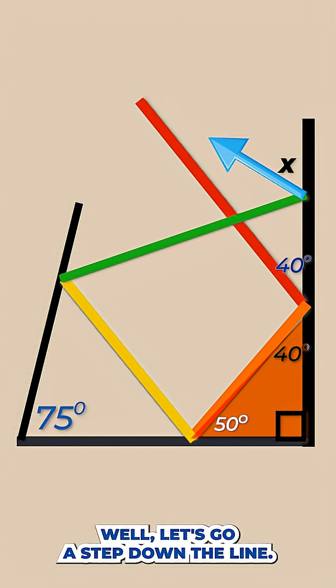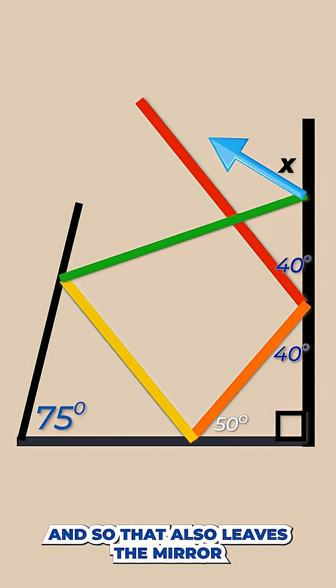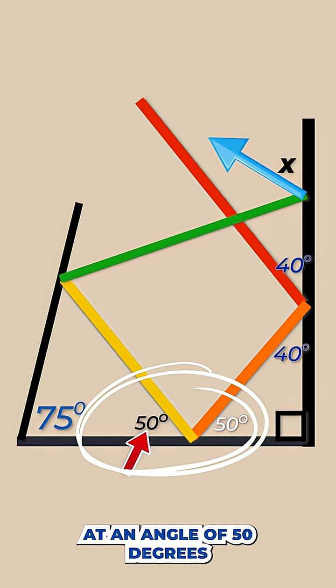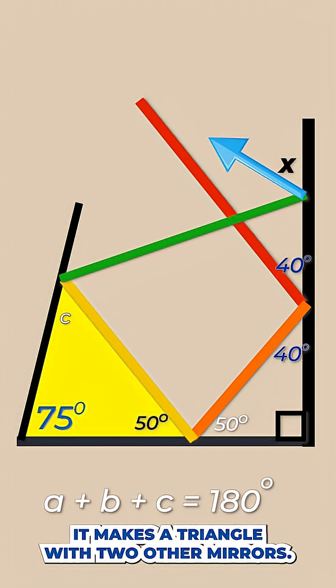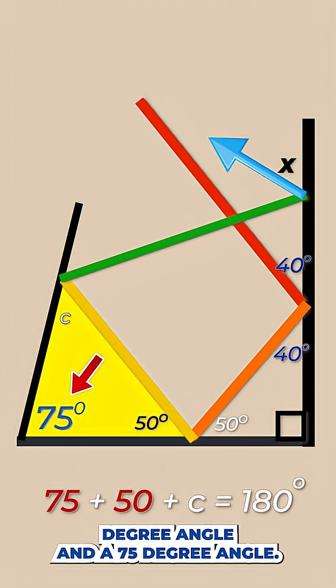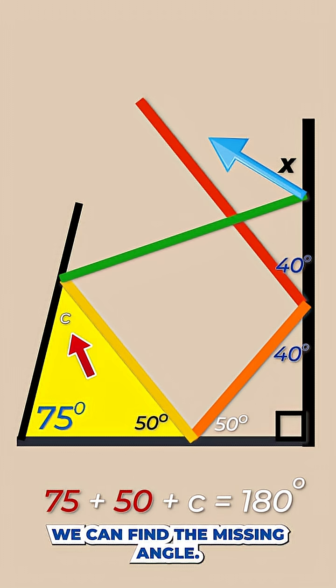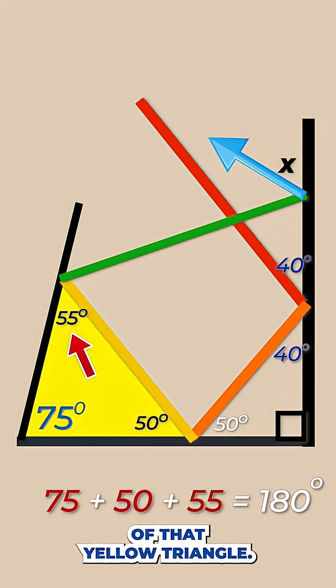Well let's go a step down the line. The orange ray bounces off to become the yellow ray, and so that also leaves the mirror at an angle of 50 degrees because of that law of reflection that we talked about before. Now look at that yellow ray. It makes a triangle with two other mirrors. So we've got a 50 degree angle and a 75 degree angle. We can find the missing angle. That's 55 degrees for the last angle of that yellow triangle.